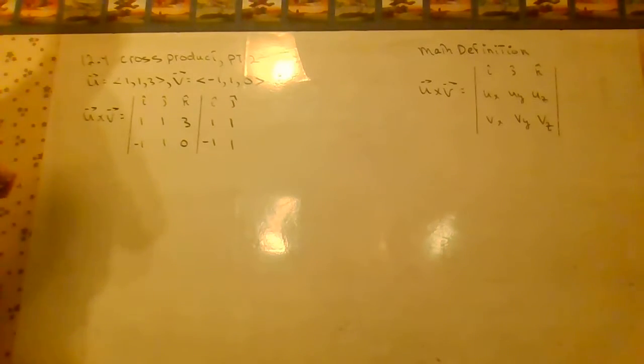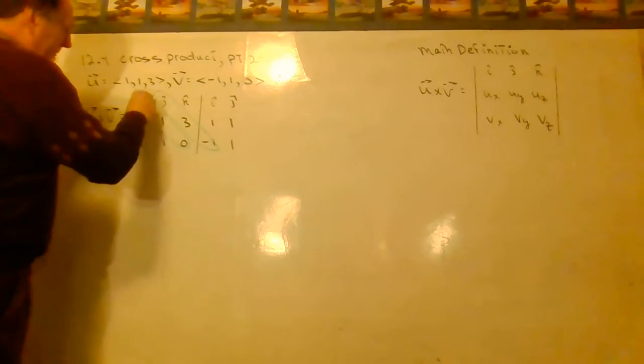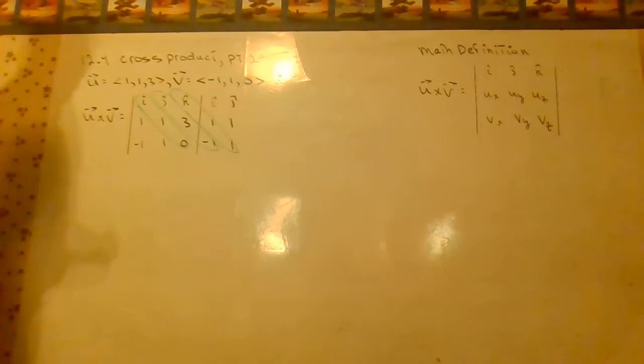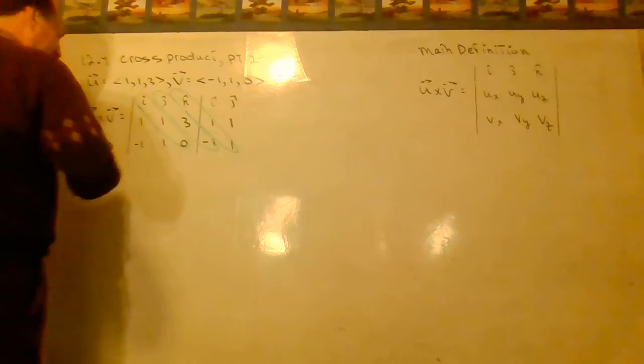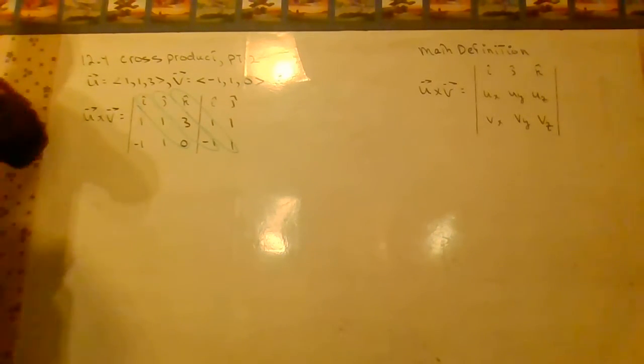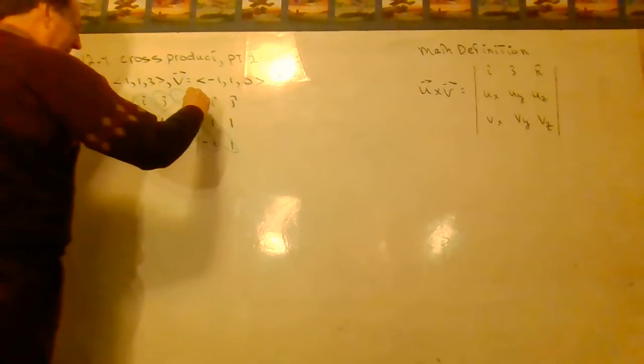And then what we're going to do is circle all the diagonals. There are three that go that way, and then there are three that go this way. Those we're going to make negative.